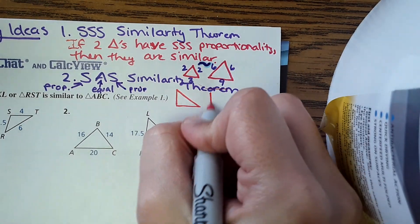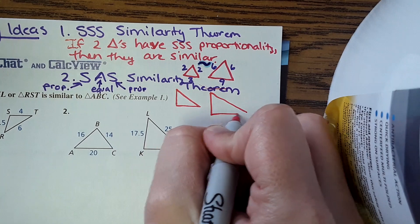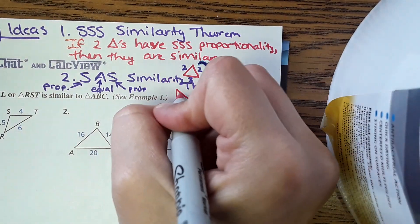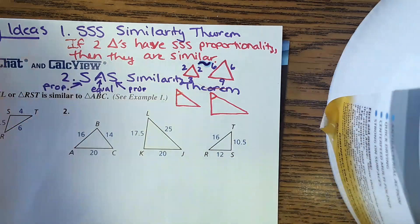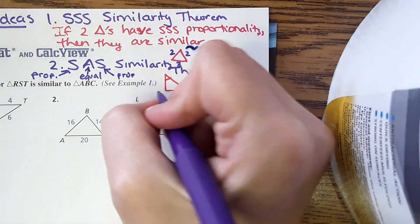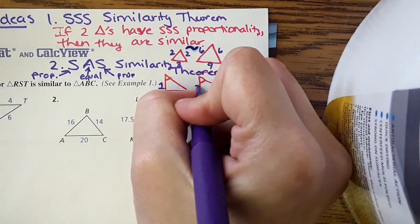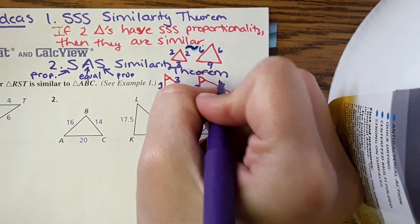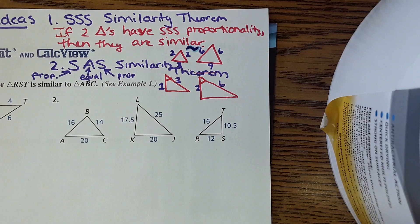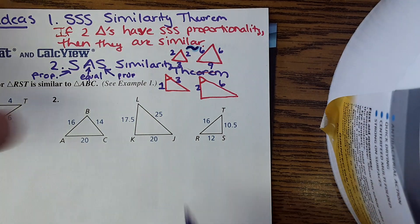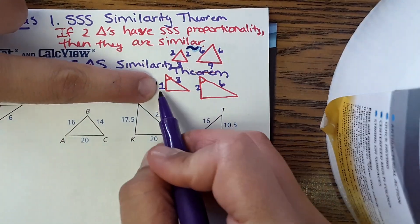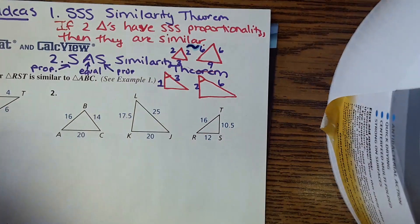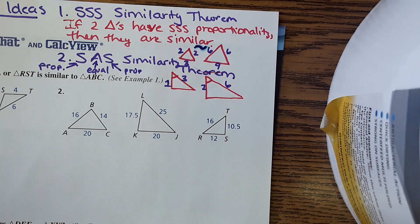Here's a triangle, and here's one similar to it. It would have an equal angle. Maybe this is 1 unit, this is 2 units, this is 3 units, and this is 6. So these corresponding sides: 1 times 2 is 2, and 3 times 2 is 6, and the included angle is equal — so these are similar.